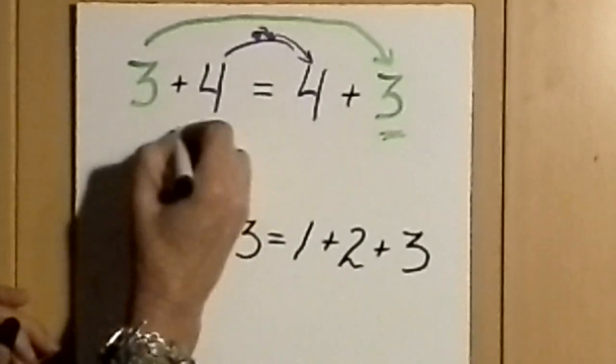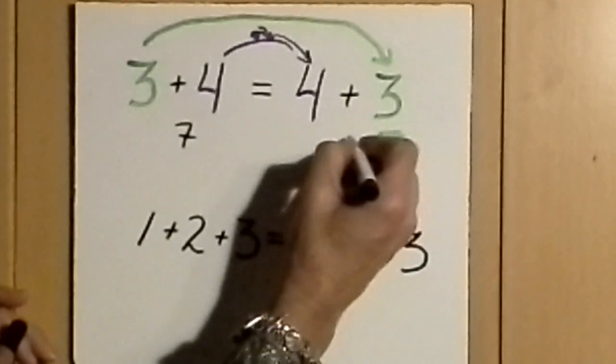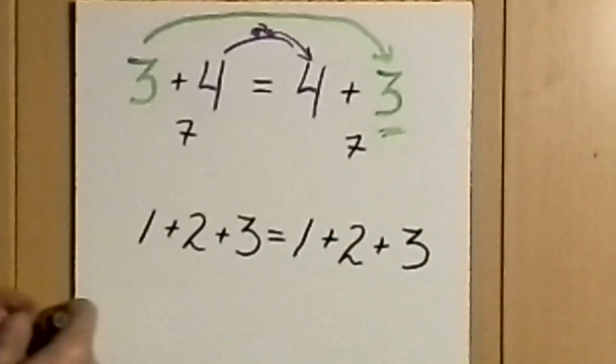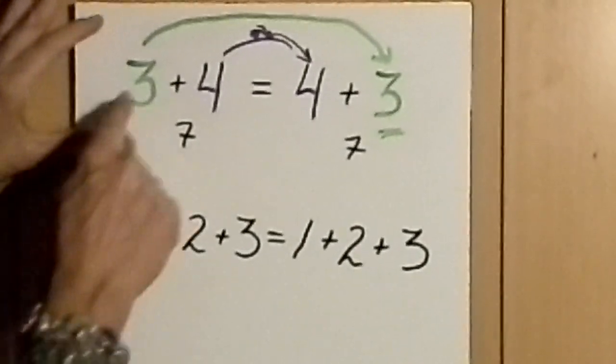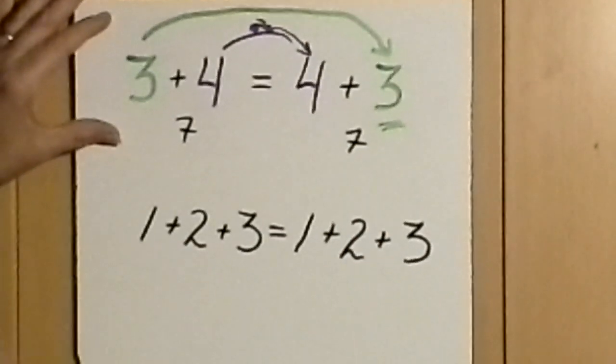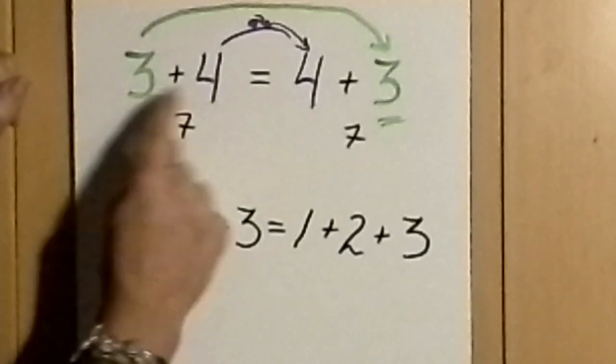3 plus 4 is 7, and 4 plus 3 is also 7. The difference, this is commutative. You'll notice it's because the values commute just like you might do in the morning from home to school.